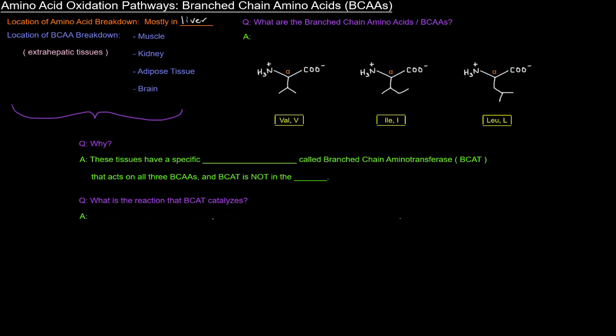So let's get into this question of why the BCAAs are broken down in these extra-hepatic tissues. Well, it's because these tissues have a specific aminotransferase called branched-chain aminotransferase, or BCAT, that acts on all three of the BCAAs, and BCAT is not in the liver. So what is the reaction that BCAT catalyzes? Well, it's an aminotransferase. So it just catalyzes a simple transamination reaction, and it produces the alpha-keto acids of each of the BCAAs.